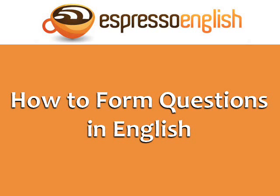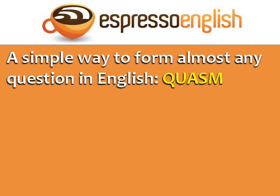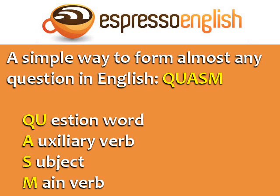How to form questions in English, from EspressoEnglish.net. Many students get confused with the word order in questions, but there's a simple way to form almost any question in English. Just follow this formula: question word, auxiliary verb, subject, main verb. This formula can be used for many tenses. Let's look at some examples.